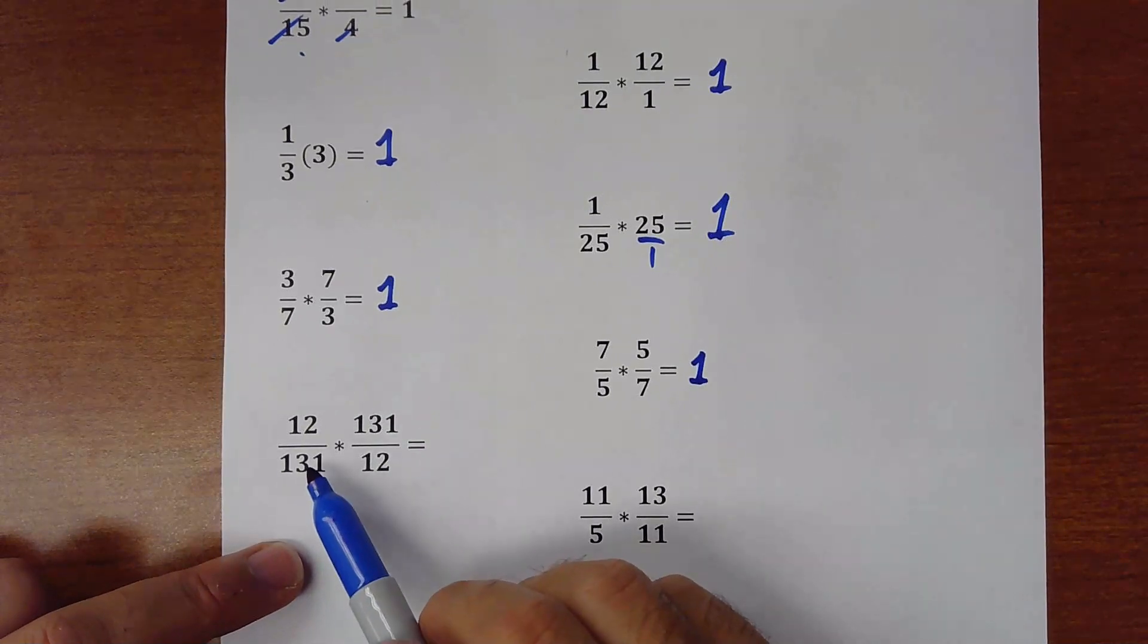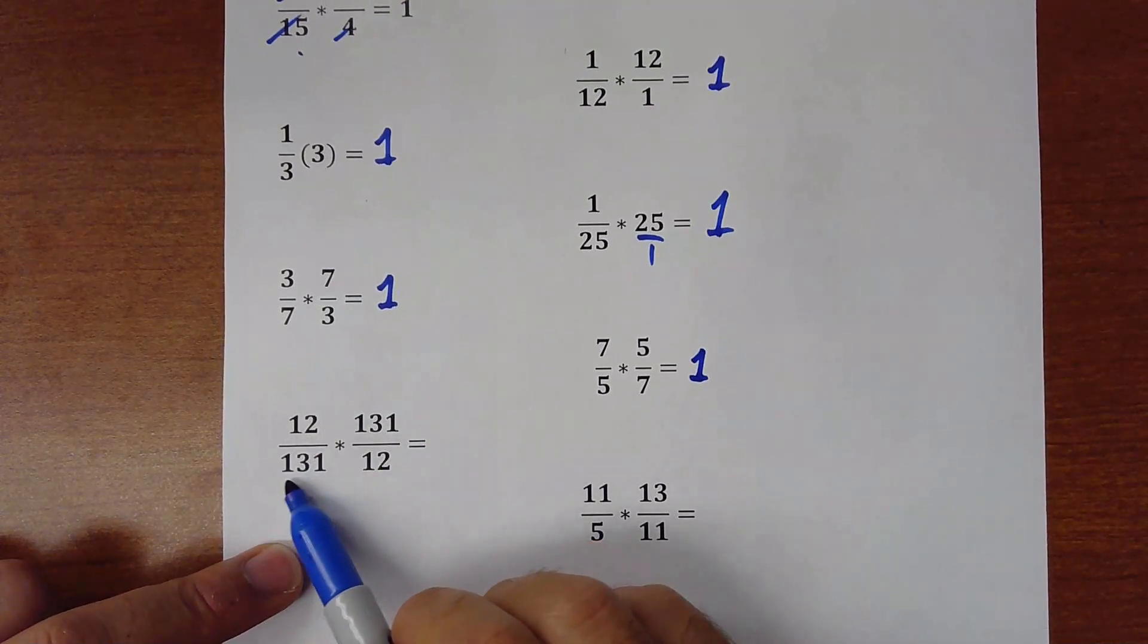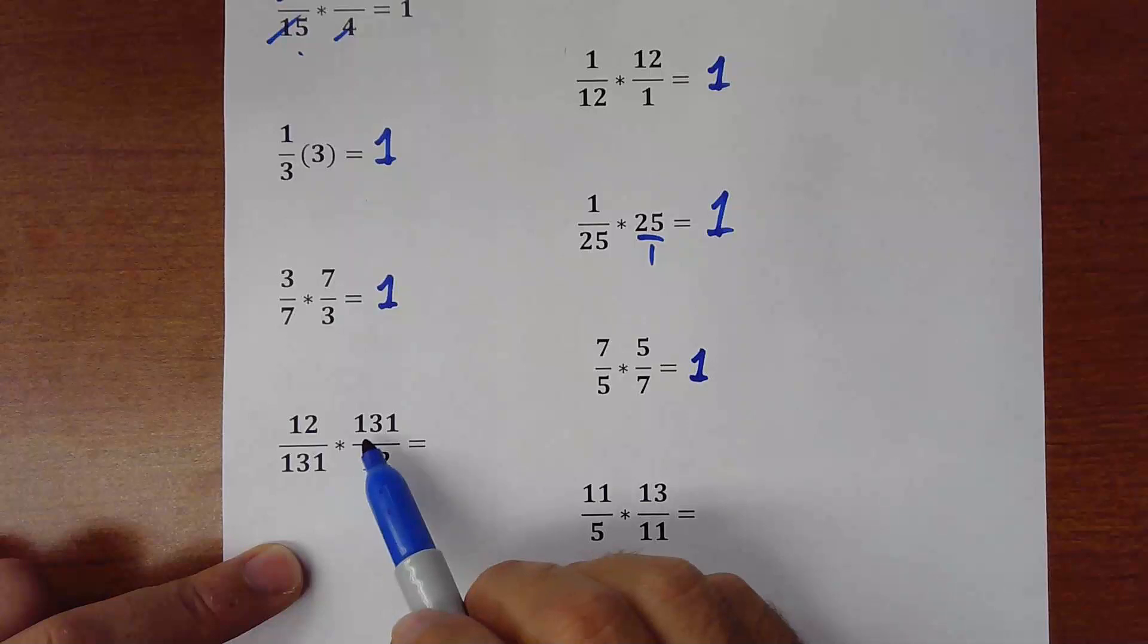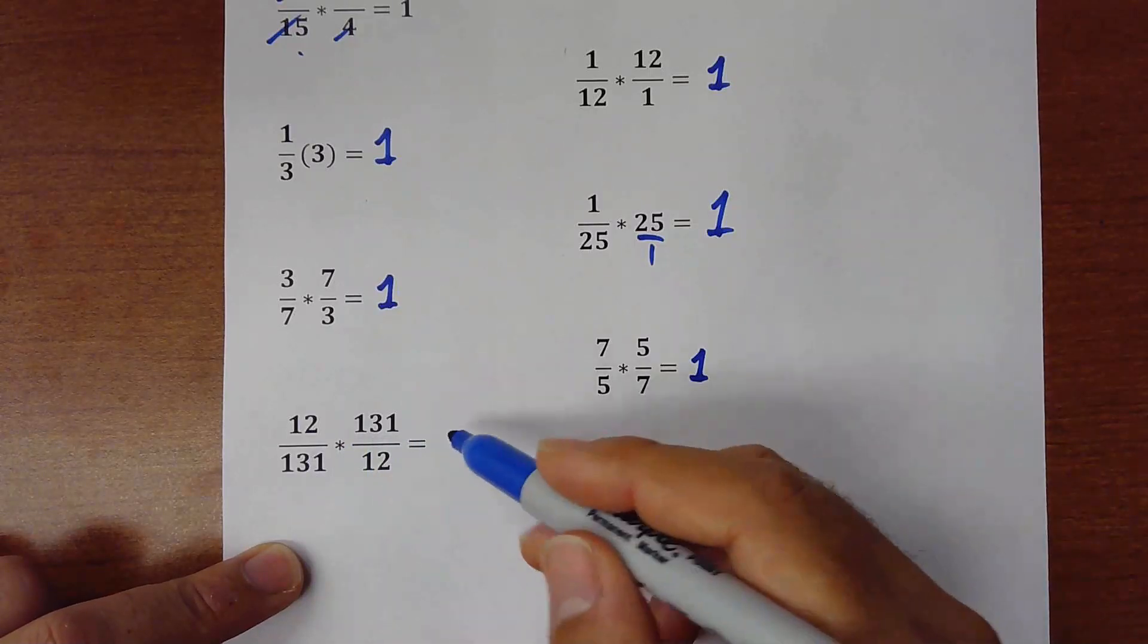Also works for big numbers and also for variables. 12 over 131 times 131 divided by 12. That would also be 1.